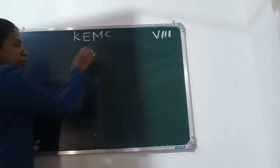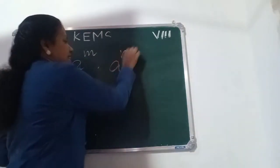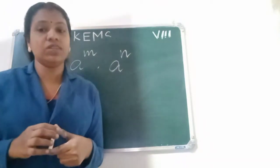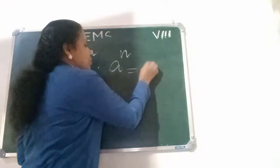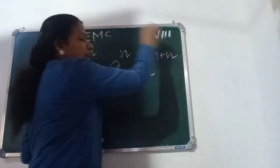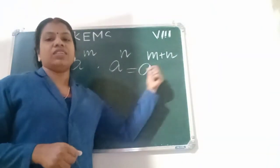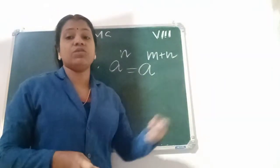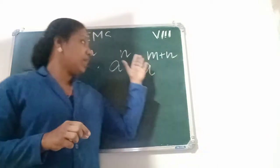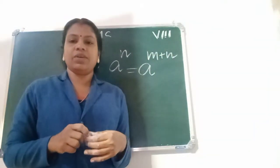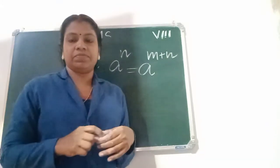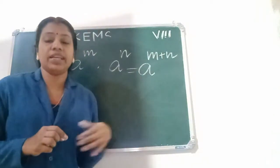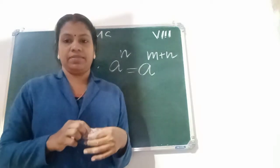First law: A raised to M into A raised to N equals A raised to M plus N, where M and N are any integers. Here A is the base. This is the first exponential law — the multiplication law.